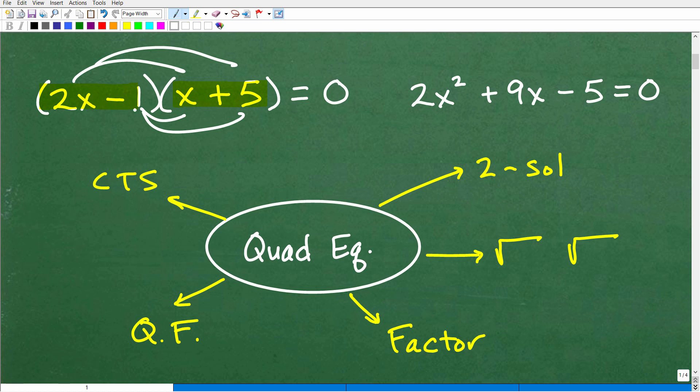But anyways, if you multiply these two binomials, you'll see that 2x minus 1 times x plus 5 is the same as 2x squared plus 9x minus 5. Again, you've got to know how to multiply binomials. But what we're dealing with here is a polynomial of degree 2.